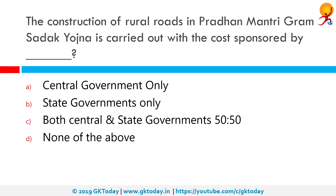The construction of rural roads in Pradhan Mantri Gram Sadak Yojana is carried out with the cost sponsored by whom? The correct answer is the central government only. The Pradhan Mantri Gram Sadak Yojana is a nationwide plan in India to provide good all-weather road connectivity to unconnected villages.